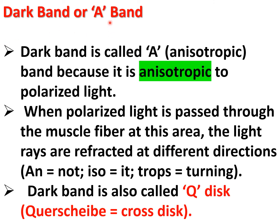The dark band is also known as the A band or anisotropic band, because it is anisotropic to polarized light — when polarized light passes through, the light rays are reflected in different directions. The dark band is also known as the Q disc, where Q (Quersch) means cross disc.